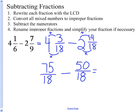And I can subtract 75 minus 50 is 25. That's over 18. And I convert this improper fraction to a mixed number. 18 goes into 25 once with 7 18ths left over.